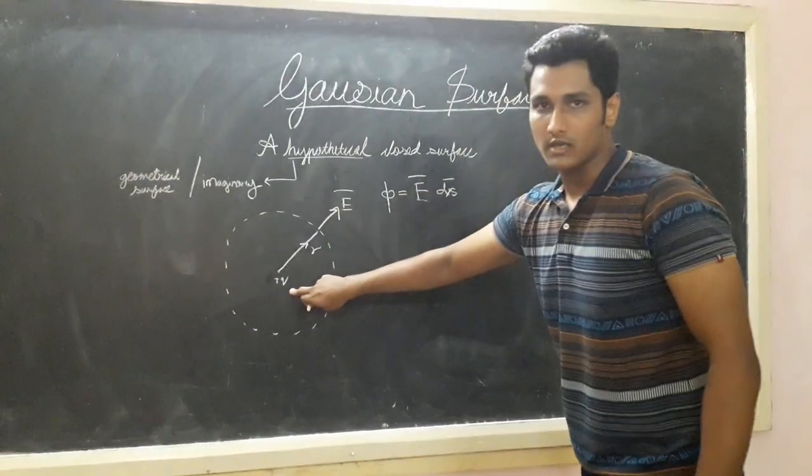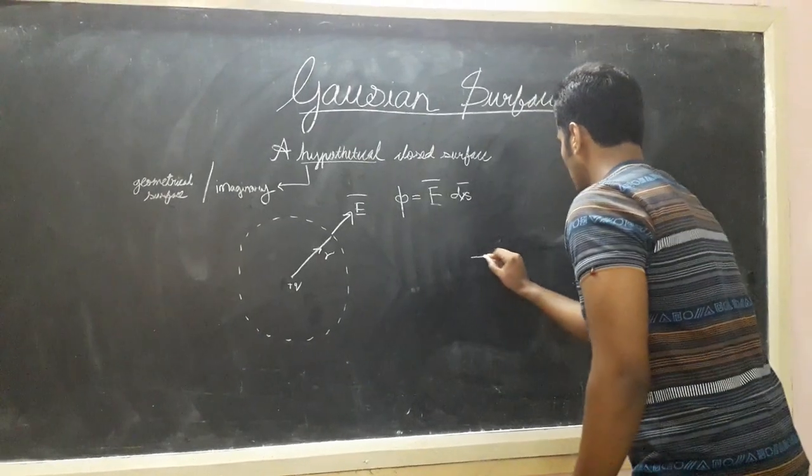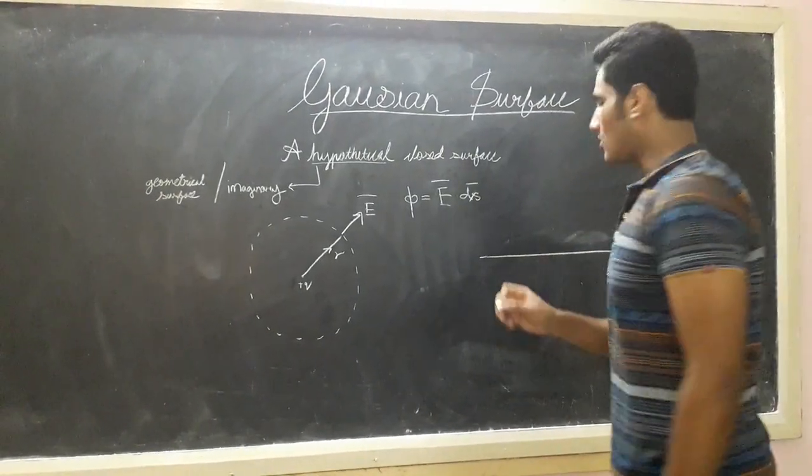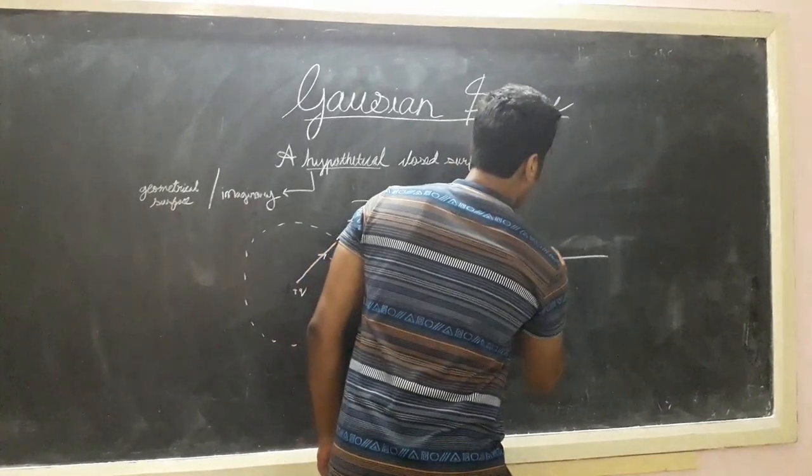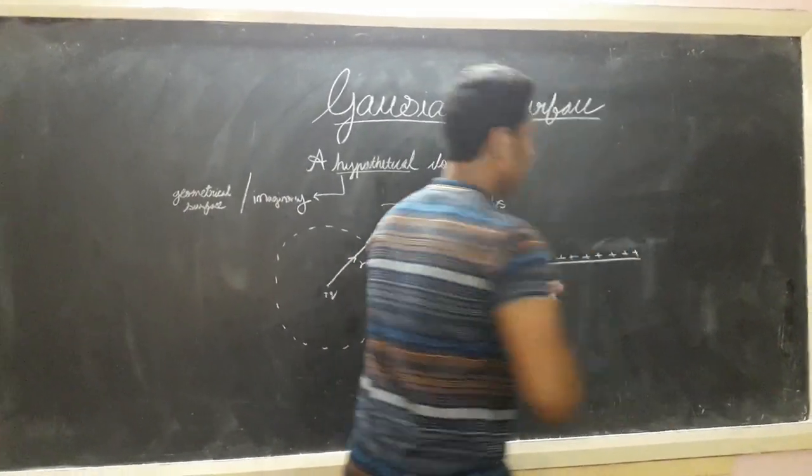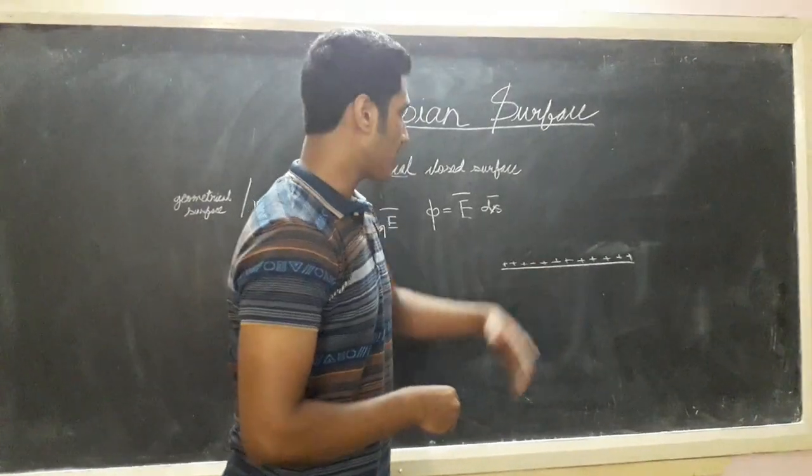Plus Q was a point charge. Now let us take a line charge. This is the line charge, and there is charge on this line.